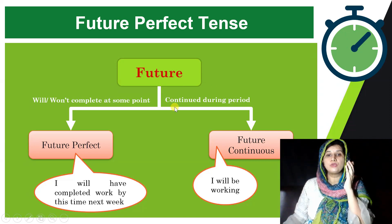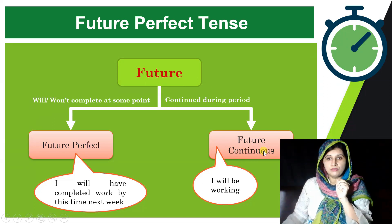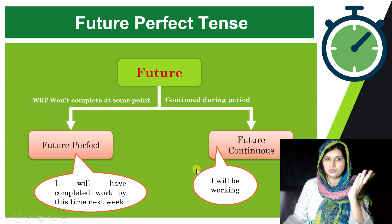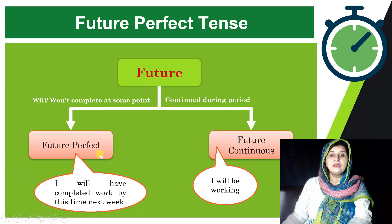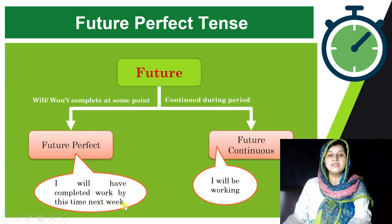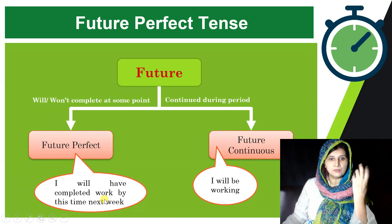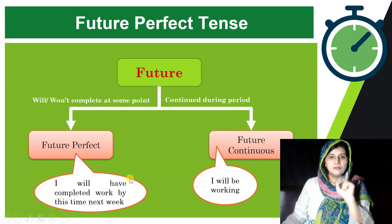In Future Continuous Tense you can say 'I will be working,' focusing on the continuity of the action over a time period. On the other hand, in Future Perfect you say 'I will have completed work by this time next week,' where you are more interested in the completion of the task at some specific point in the future.